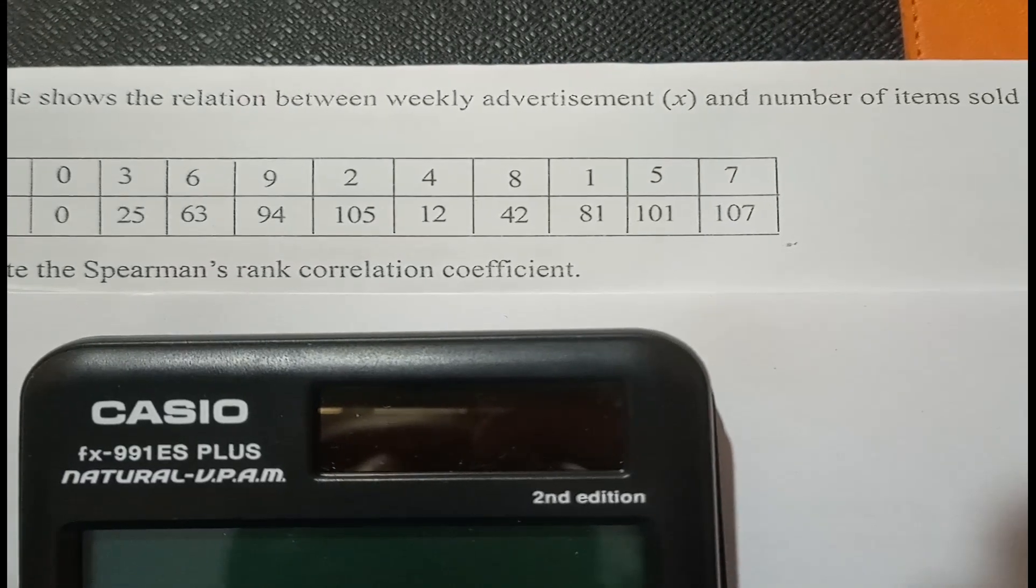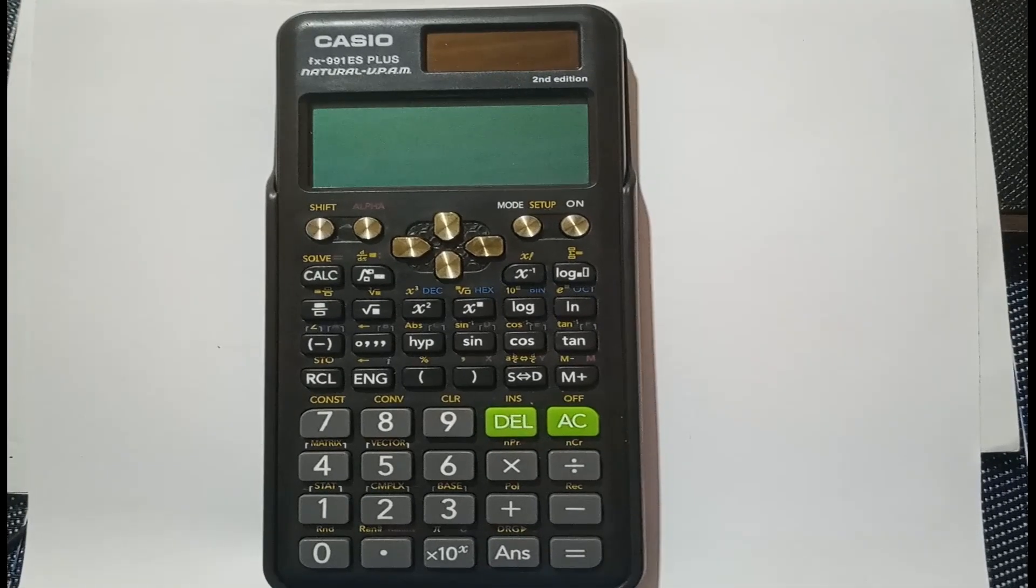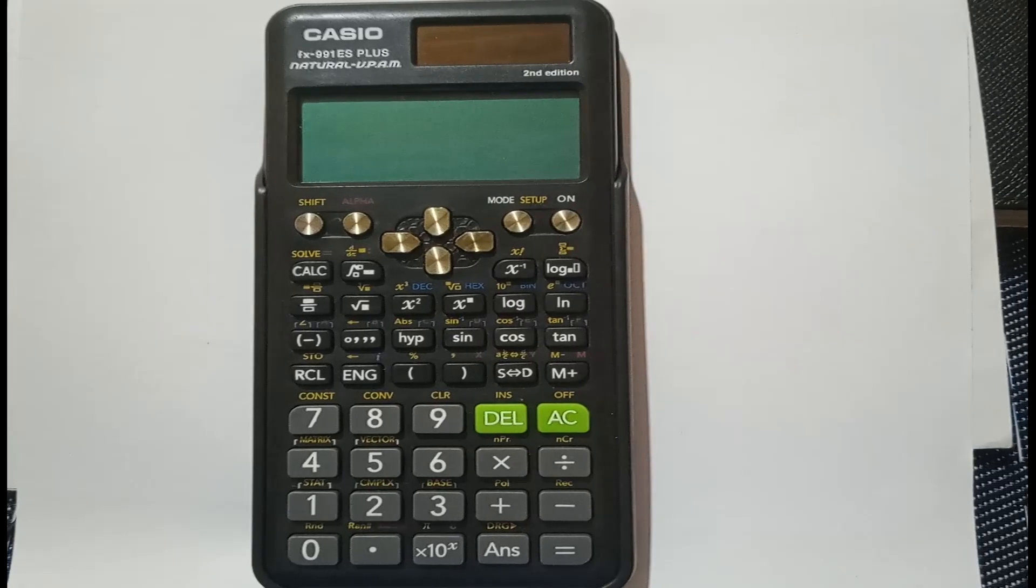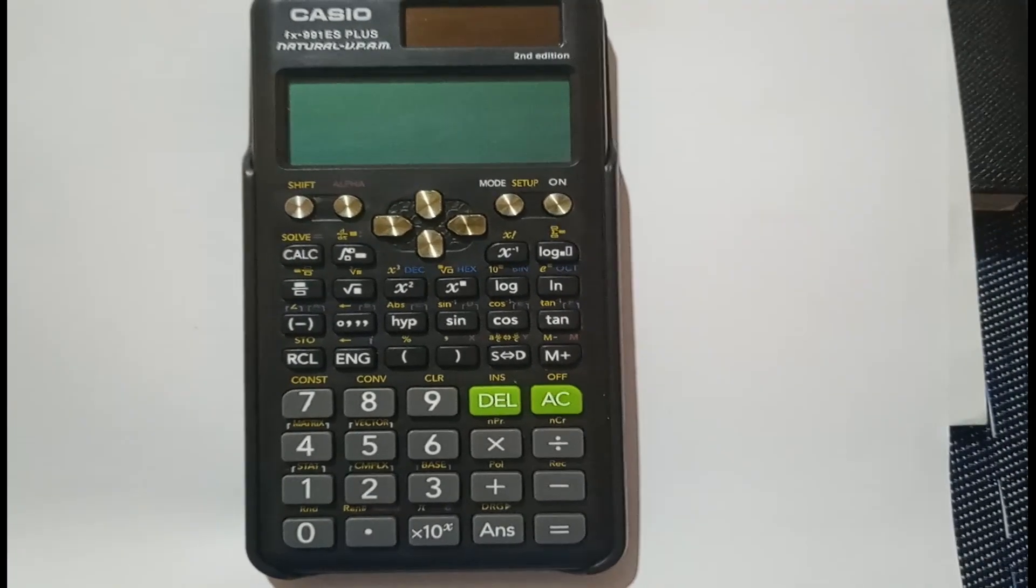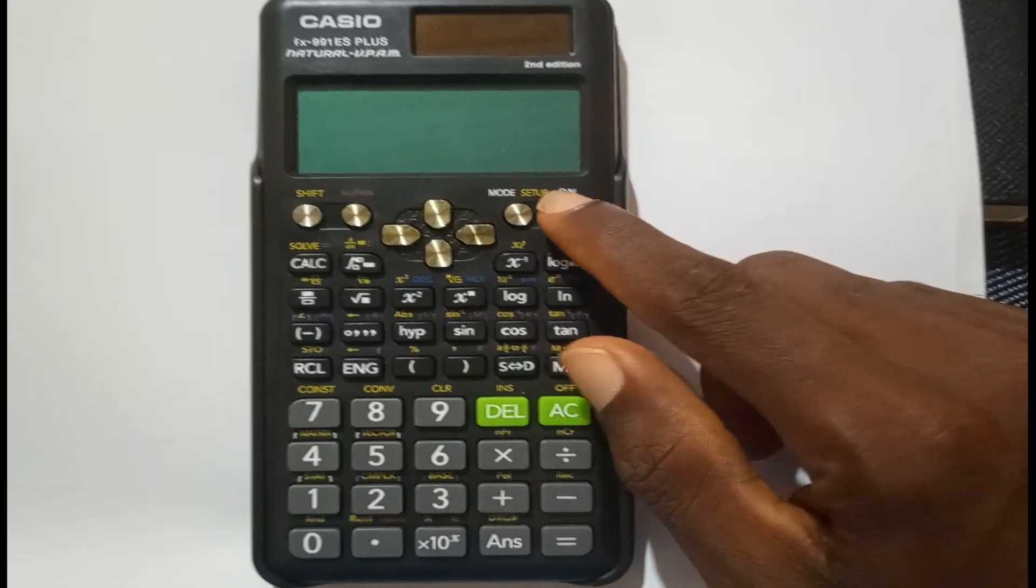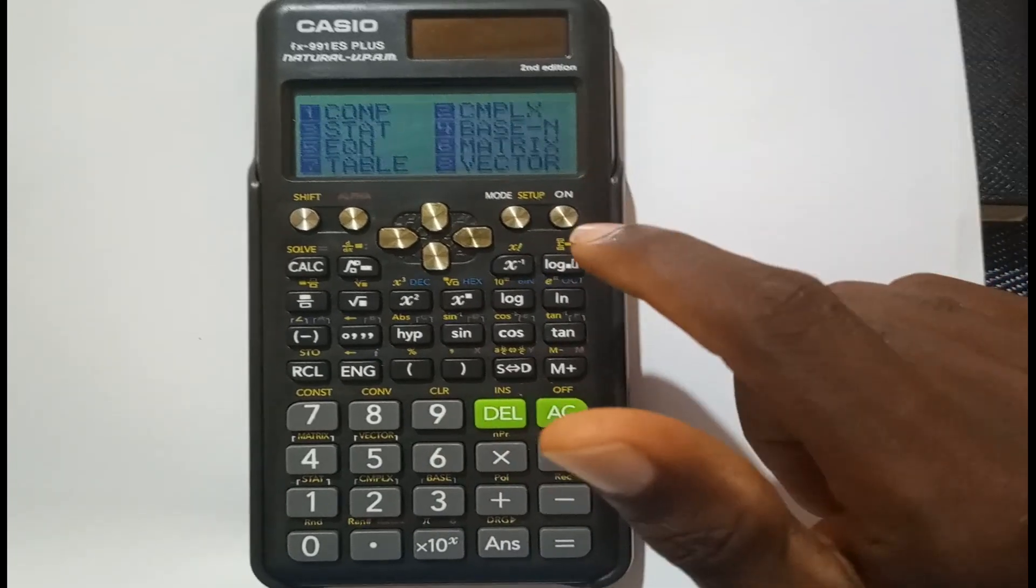The question says calculate the Spearman's rank correlation coefficient. We're going to use the calculator to construct a table and find the Spearman's rank correlation coefficient. First, turn on the calculator, then press MODE. This work is statistic, so press 3.